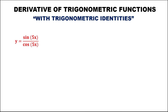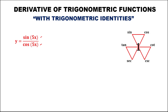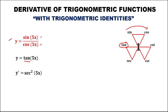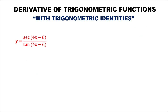For this given, y equals sine 5x over cosine 5x. Using this figure and the ratio identity — for the ratio of two functions, the result is the function before them. So sine over cosine gives tangent. This equation equals y equals tangent 5x. The derivative of tangent is secant squared 5x times the derivative of 5x, which is 5. So y prime equals 5 times secant squared 5x.